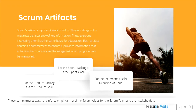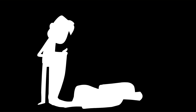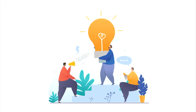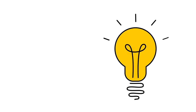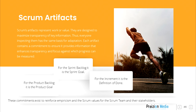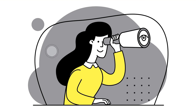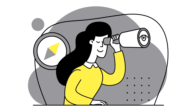Scrum Artifacts. Scrum's artifacts represent work or value. They are designed to maximize transparency of key information. Thus, everyone inspecting them has the same basis for adaptation. Each artifact contains a commitment to ensure it provides information that enhances transparency and focus against which progress can be measured. For the product backlog, it is the product goal. For the Sprint Backlog, it is the Sprint Goal. For the increment, it is the definition of done. These commitments exist to reinforce empiricism and the Scrum values for the Scrum Team and their stakeholders.